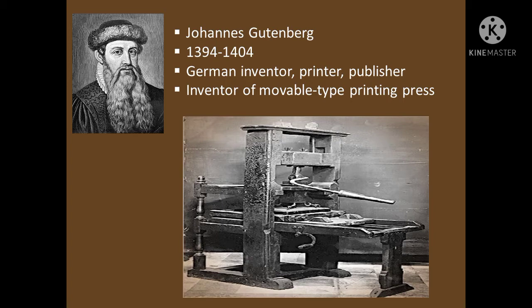His invention of movable type sparked the printing revolution. The printing press is a machine that enables the mass production of uniform printed materials, mainly text in the form of books, pamphlets, and newspapers. The printing press was invented in China and reinvented society there before being further developed in Europe by Johannes Gutenberg with his invention of the Gutenberg press in the 15th century.